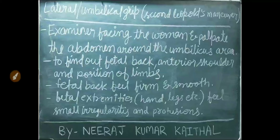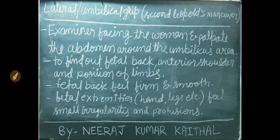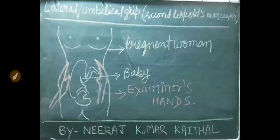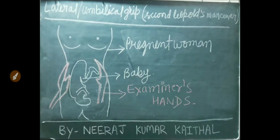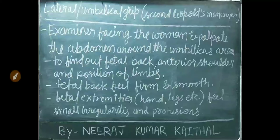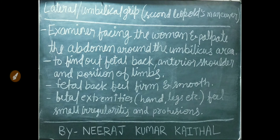Second: lateral or umbilical grip. To perform this, the examiner faces the woman and palpates the abdomen around the umbilicus area. In the diagram, the pregnant woman is lying on the bed and the examiner is facing her, palpating with both hands near the umbilicus area. This second Leopold's manoeuvre is used to find out the fetal back, anterior shoulder, and position of limbs. The fetal back feels firm and smooth, while fetal extremities — hands, legs, etc. — feel like small irregularities and protrusions.